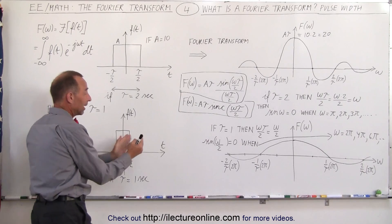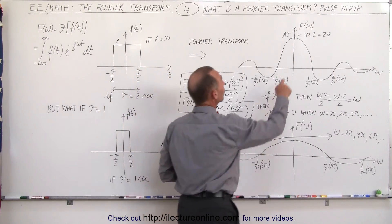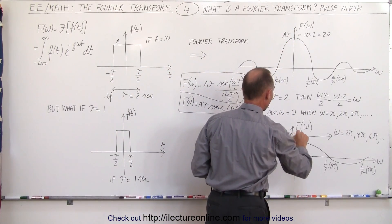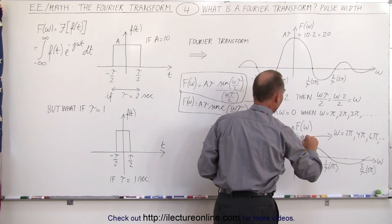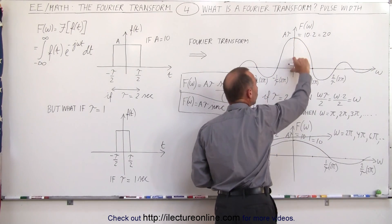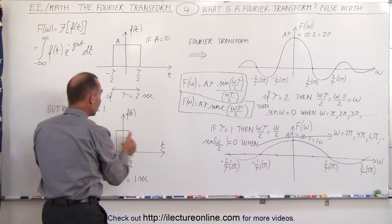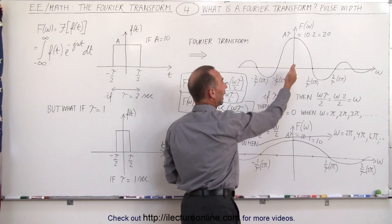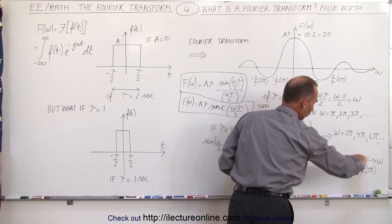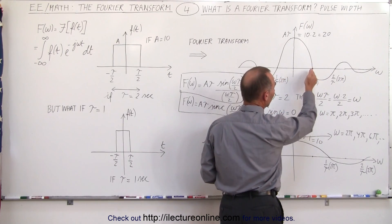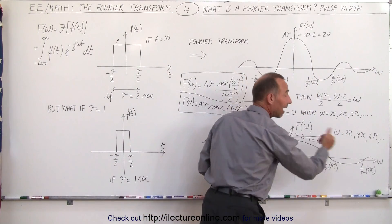So narrowing the pulse widens the frequency domain function. The amplitude also changes, since amplitude equals A times tau. With tau equal to 1 and A equal to 10, the amplitude becomes 10 times 1, which is 10 — so it reduces the amplitude and widens the function. Conversely, widening the pulse increases the amplitude and narrows the function, with zero crossings moving inward to roughly π/2, π, 3π/2, and so forth.